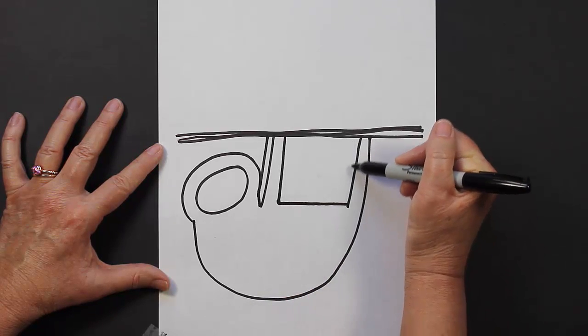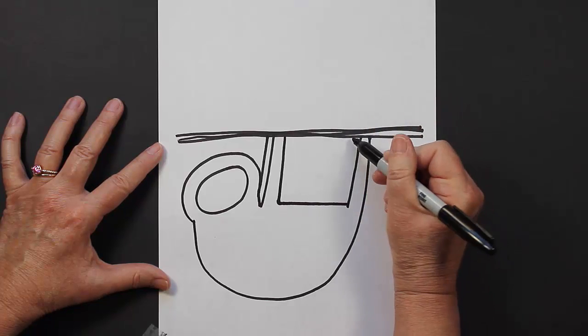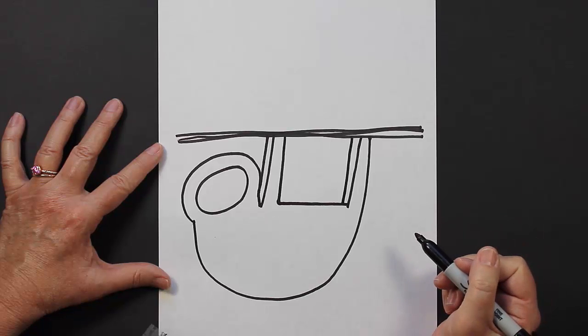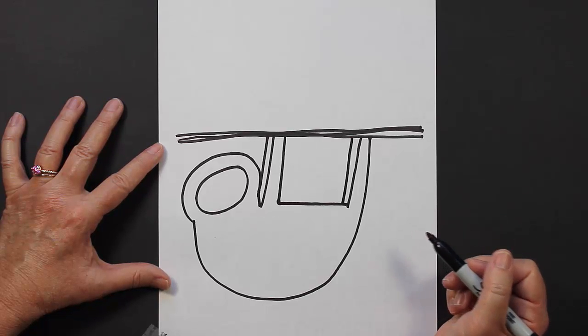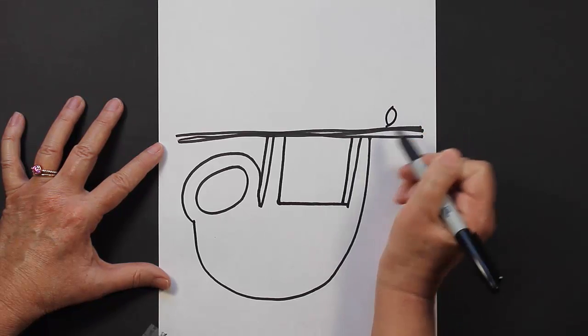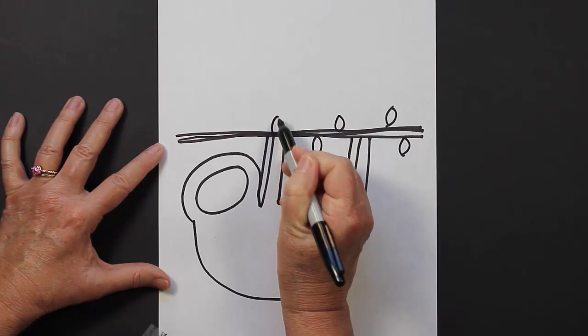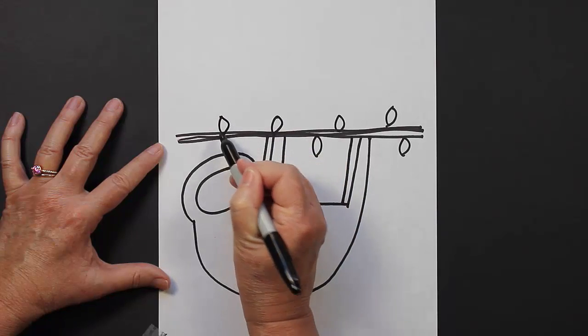Now on the other side of the sloth, he's going to have another leg. So we're going to make that coming down. Let's put a few leaves up here on our branch. Those are basically just some curved lines.